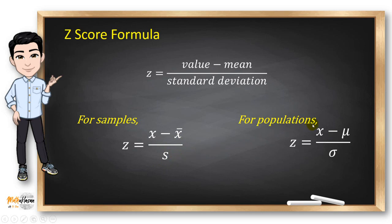For populations, it's just the same. We just need to change the symbols for the mean which is now mu for the population and sigma for the population standard deviation.